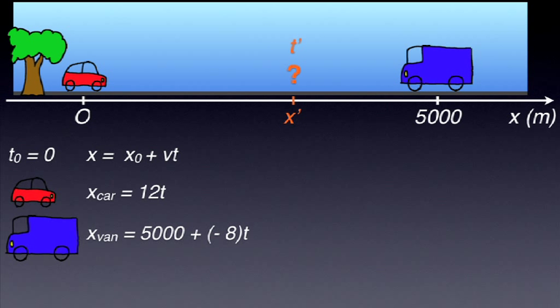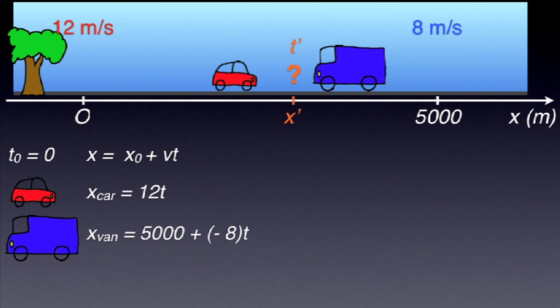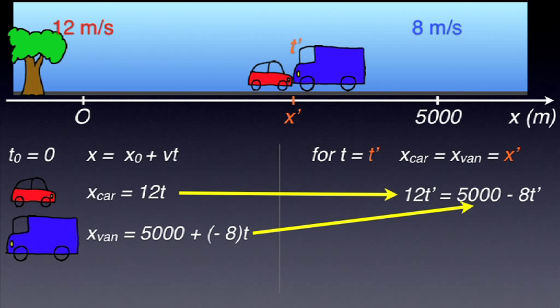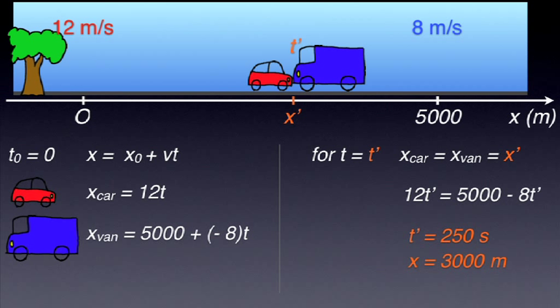To find out the coordinate x prime at the time t prime, when the two cars meet, we put a condition that for t equals t prime, the two coordinates coincide. X car equals x van. And from here, we have 12t prime equals 5000 minus 8t prime. A very simple equation to solve. 20t prime equals 5000, from where we can get the value for t prime: 250 seconds. Then, we can replace t prime in either of the two equations of motion, and we get x prime equals 3000 meters. So the two cars meet after 250 seconds, at 3000 meters away from the initial position of the red car.